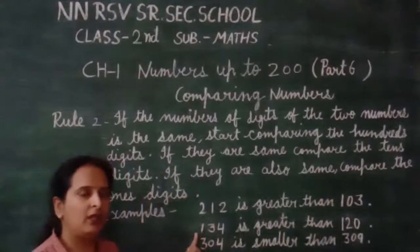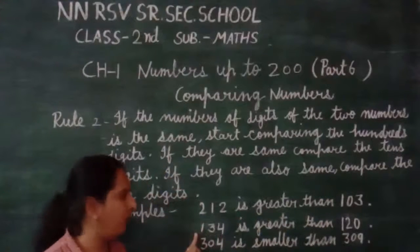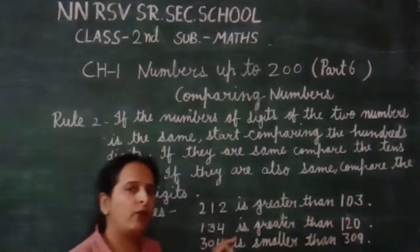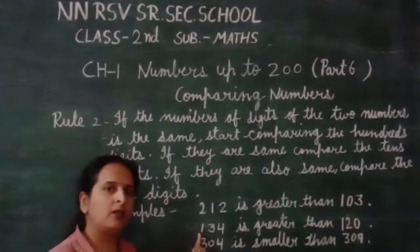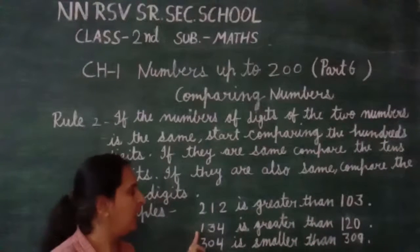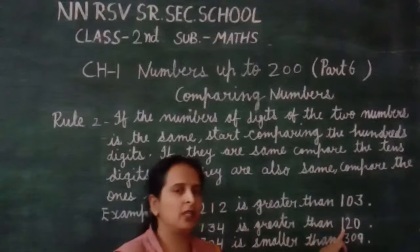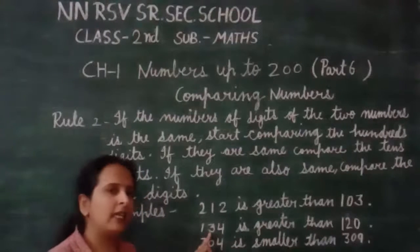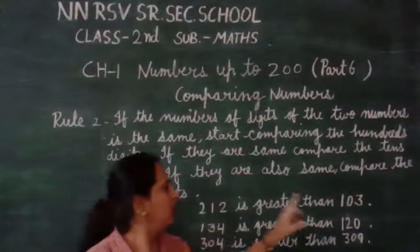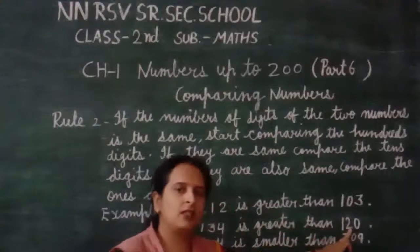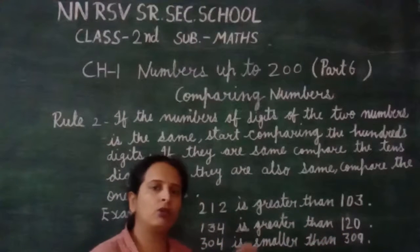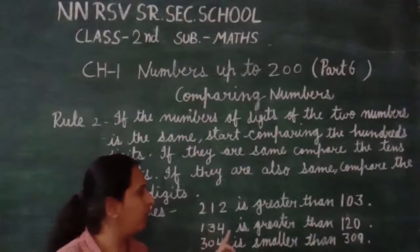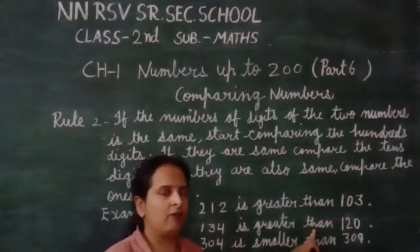In the second example, 134 is greater than 120. First of all, we check the 100s digit — it is 1 in both numbers. Then we move to the 10s digit. In 134, the 10s digit is 3, and in 120, the 10s digit is 2. Which is bigger — 3 or 2? 3 is bigger. So we can say 134 is greater than 120.